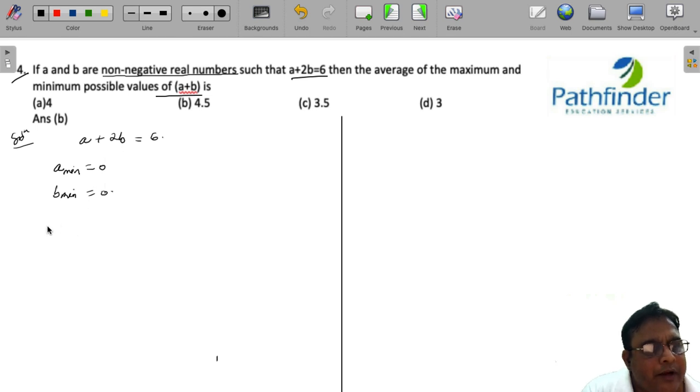And what about the maximum values? A maximum will happen when the minimum of B is there. So A maximum plus 2 times B minimum must be 6.